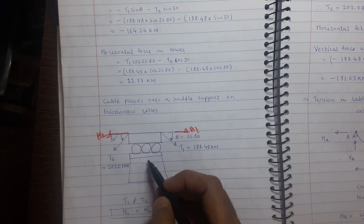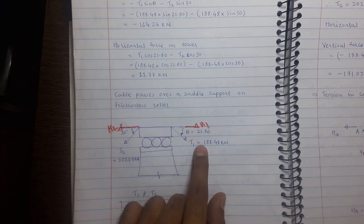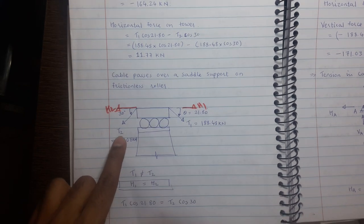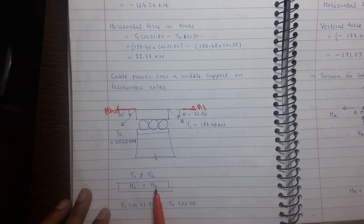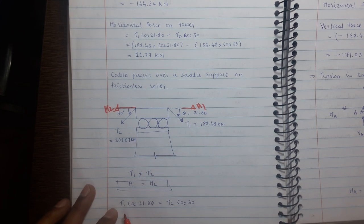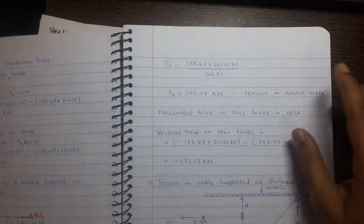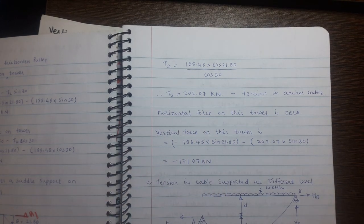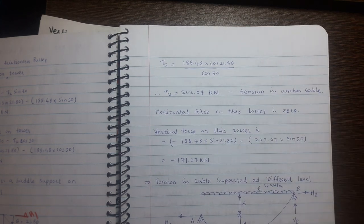Using the condition T1·cos(21.80) = T2·cos(30), we can find T2. Substituting T1 = 188.48 kN: T2 = 188.48 × cos(21.80) / cos(30) = 202.07 kilonewtons. This is the tension in the backstay or anchor cable for the saddle case.